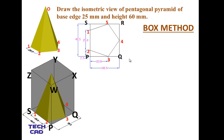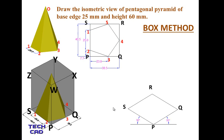Now I'm going to start the isometric view. Make a reference line and take a point P. Draw line PS with a dimension of 40.5 mm at an angle of 30 degrees, and similarly draw line PQ at 30 degrees — in isometric view we always take angles at 30 degrees. Complete the base rectangle PQRS, where SR is parallel to PQ and QR is parallel to PS.